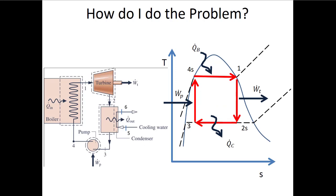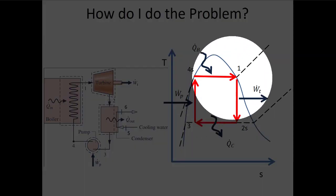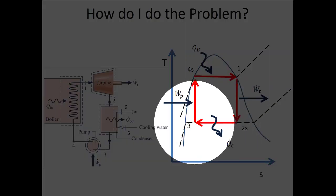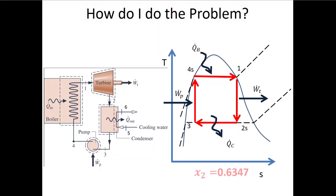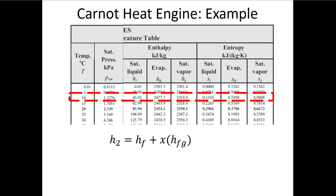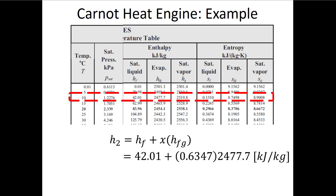With quality X2S = 0.635 determined from entropy, I now use the same table row to find the specific enthalpy: h2S = hf + X2S · hfg. Plugging in the values, h2S = 1614.6 kJ/kg. This goes into my state table. Now I only need one more state — state 3.